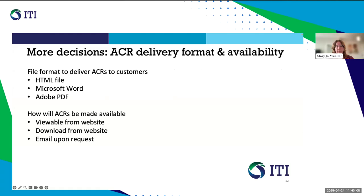Knowing what file format you'll want to deliver your product ACRs in and how you want to make them available can help you plan for testing and be ready for customer requests for accessibility information. You can directly use the VPAT, which is in Microsoft Word, and deliver your product ACRs in that format. HTML or PDF might also be the right delivery format for you. Whatever format you use, make sure the final document is accessible. Plan early for how customers might obtain your product ACRs — whether they are viewable or downloadable from your website, made available on request, or only provided when directly responding to a bid.